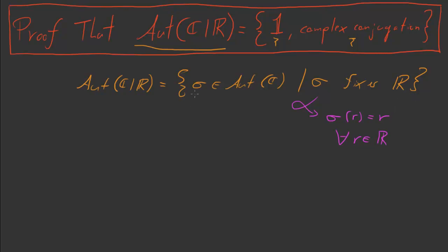What we want to prove is there are only two things that do this. There are only two guys in Aut(ℂ|ℝ). These are one, the identity, and complex conjugation. So I think the proof of this pretty much has just two ideas. Let's look at both of them individually, because they're both important in their own right, and their ideas which will keep coming up in the future.